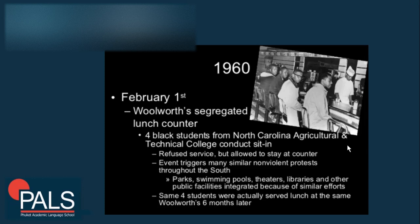In 1960, on February 1st, black students from North Carolina Agricultural and Technical College conducted a sit-in at Woolworth's segregated lunch counter. They were refused service but allowed to stay at the counter. This event triggered many similar non-violent protests throughout the South — at parks, swimming pools, theaters, libraries, and other public facilities. The same four students were actually served lunch at the same Woolworth's six months later.